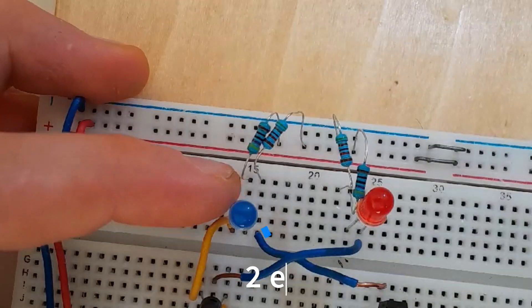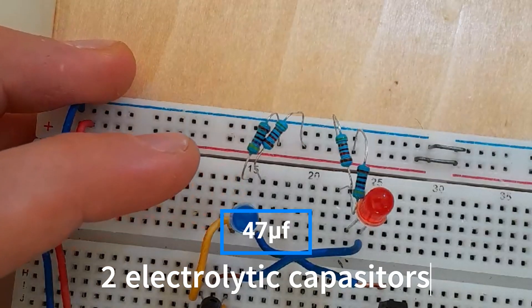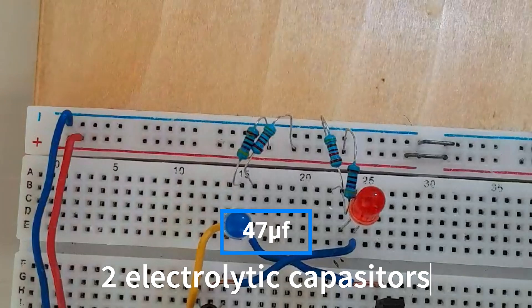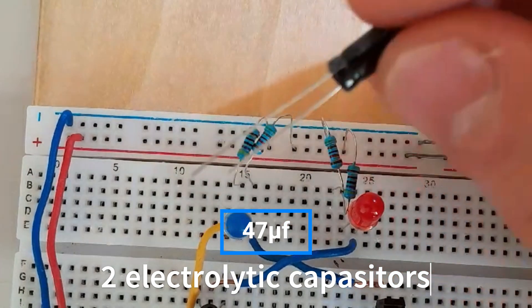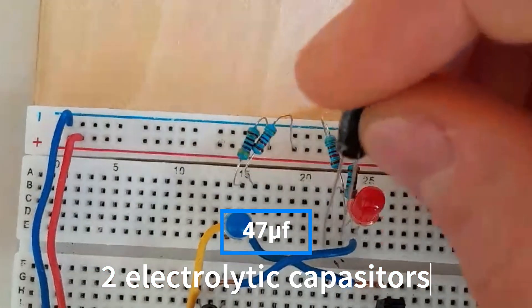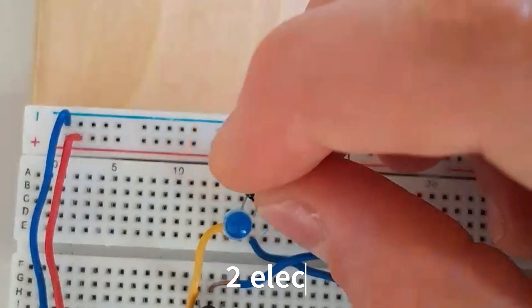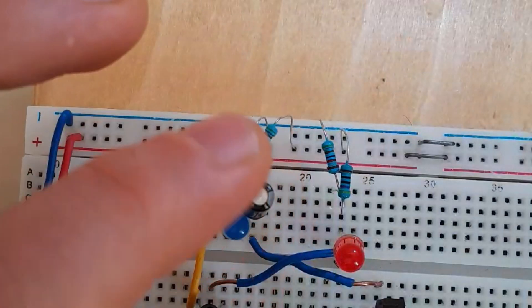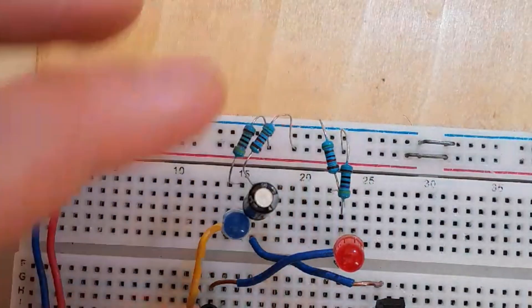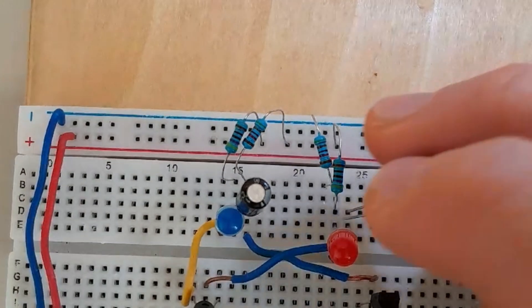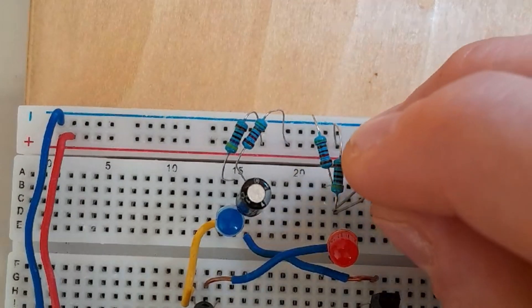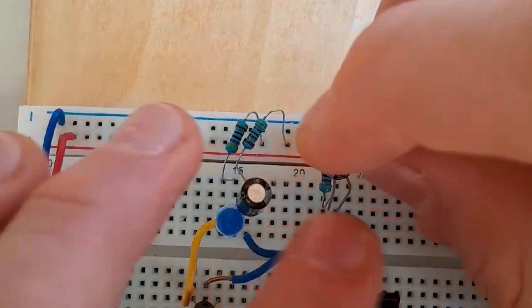Then we are going to connect the 47 microfarad capacitor. The positive or the long leg to the LED, and the negative pin to the 47 kilo-ohm resistor. Same for the other side.